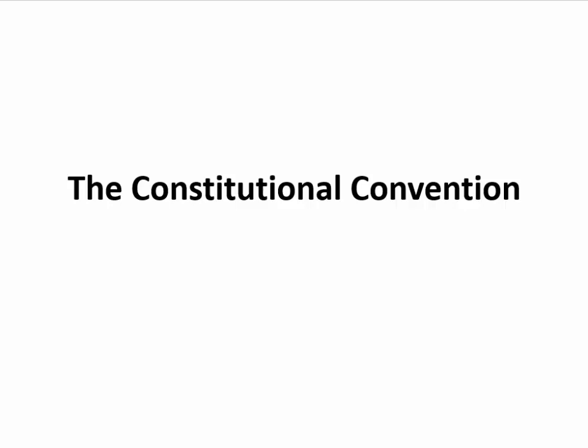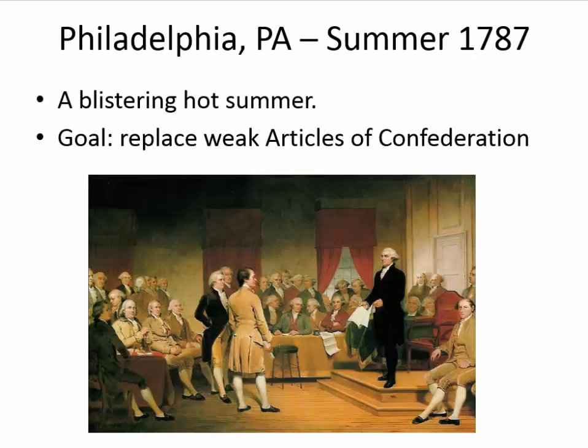Shays' Rebellion was kind of the straw that broke the camel's back, where people finally said, listen, this government's not working, we need to come up with something different. So they meet in Philadelphia in the summer of 1787. It is hot — very, very hot, almost record-breaking. The goal: replace the Articles of Confederation.